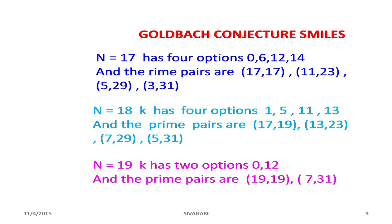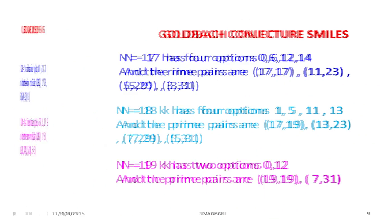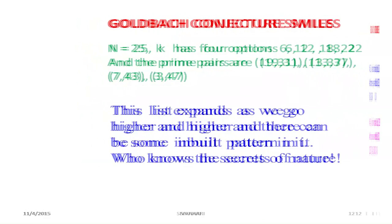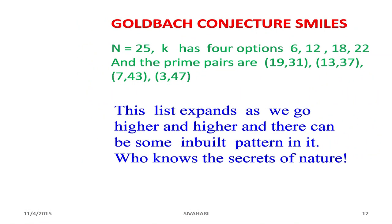Similarly, we have n equals 18, 19, 20, 21, 22, 23, 24, and 25. For n equals 25, k has four options: 6, 12, 18, and 22, giving four pairs of prime numbers: (19, 31), (13, 37), (7, 43), and (3, 47).